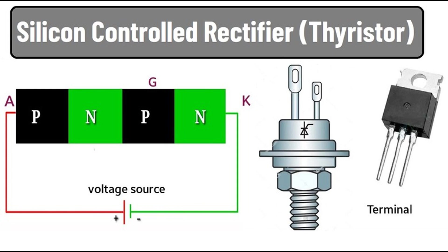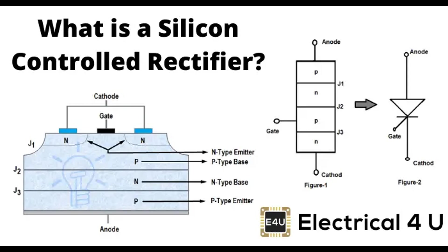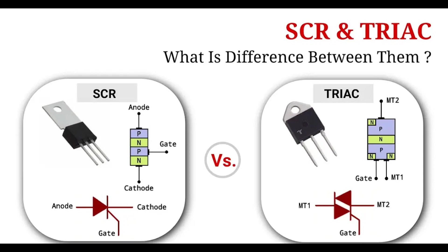Commonly used SCRs: 2N5060 — Type: sensitive gate SCR. Application: used in low power switching applications such as small motor controls, light dimmers, and various consumer electronics. BT151 — Type: medium power SCR. Application: widely used in light dimming circuits, motor speed control, and power switching applications where moderate current handling capabilities are required. C106D — Type: general purpose SCR. Application: found in a wide range of consumer electronics and industrial control systems for switching and power regulation. 10612 — Type: high current SCR. Application: suitable for high power applications such as industrial motor controls, power supplies, and heating control systems where significant current handling capabilities are necessary.